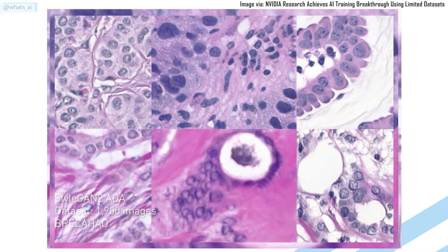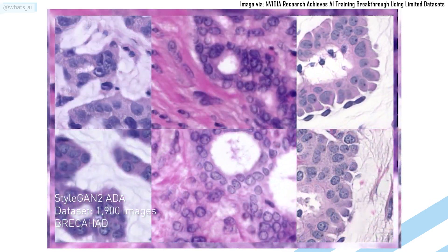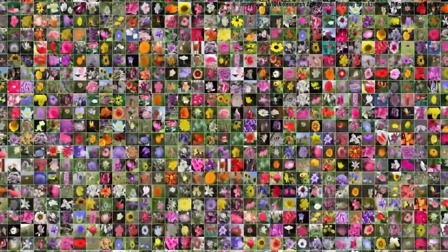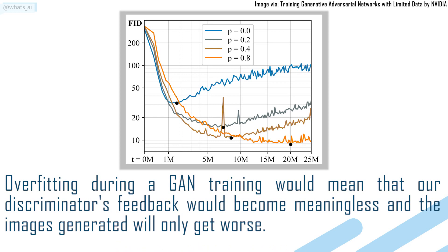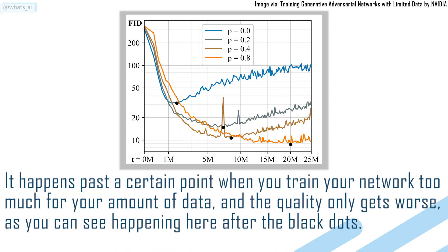But in order to produce these great and realistic results, we need two things: a training dataset composed of thousands and thousands of images, and stopping the training before overfitting. Overfitting during a GAN training will mean that our discriminator's feedback will become meaningless, and the images generated will only get worse. It happens past a certain point when you train your network too much for your amount of data, and the quality only gets worse, as you can see happening here after the black dots.